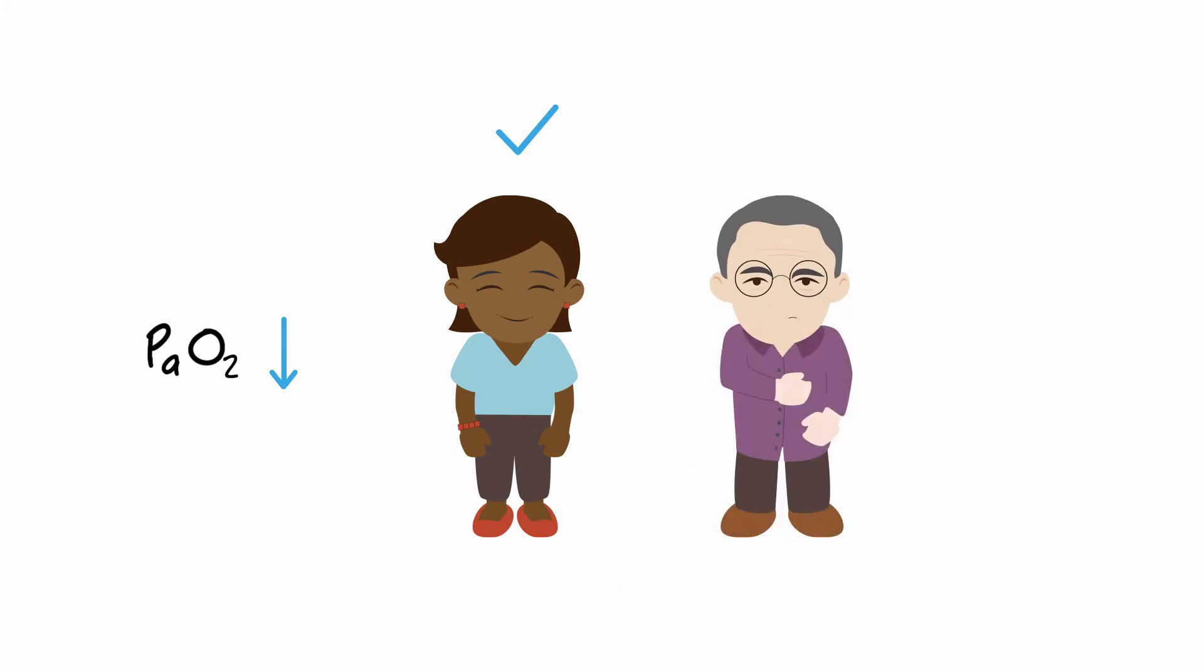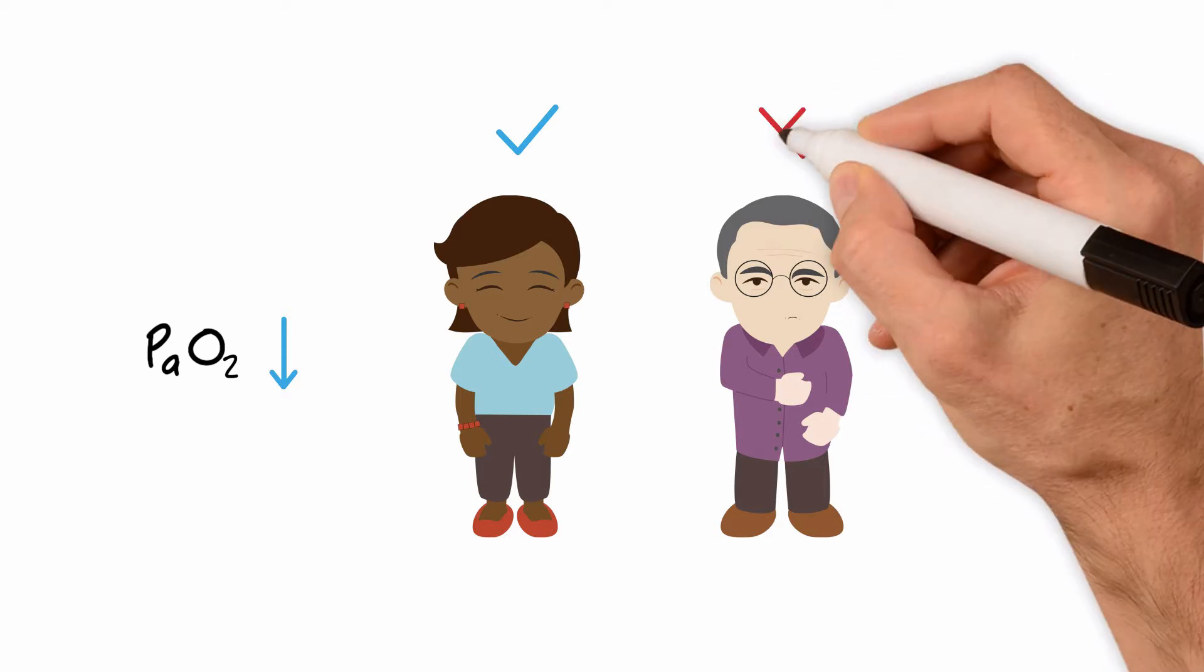However, for patients with lung disease, like obstructive airways disease or interstitial lung disease, the fall in arterial PO2 during flight may be a problem.